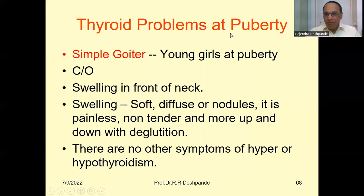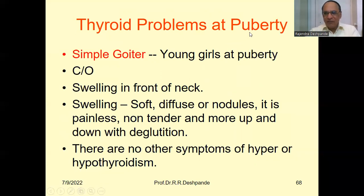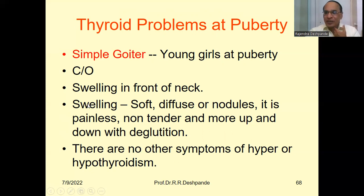Thyroid problems at puberty are a little different from problems in adults. This is a simple goiter. Young girls at puberty, at the age of 13 to 17, may suffer from thyroid problems. There is swelling in front of the neck. The swelling is soft, diffuse, or maybe nodular, but it is painless and non-tender. If you touch it, there is no pain. The swelling moves up and down during deglutition — you can ask the patient to drink sips of water to observe this movement.